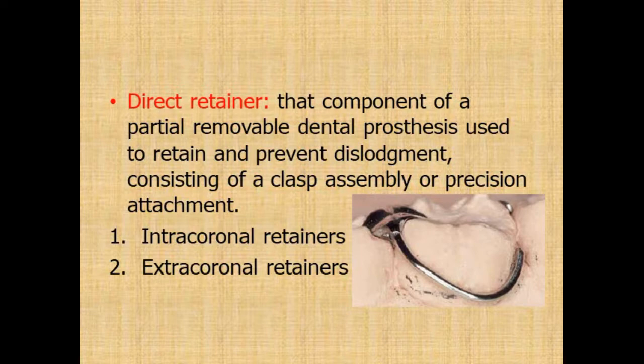The direct retainer is that component of a partial removable dental prosthesis used to retain and prevent dislodgement, consisting of a clasp assembly or precision attachment. It is classified into intracoronal and extracoronal retainers. Intracoronal retainers include the precision attachment and extracoronal include the clasp assembly. We are not going into detail of the direct retainer — just mention the classification and move on.